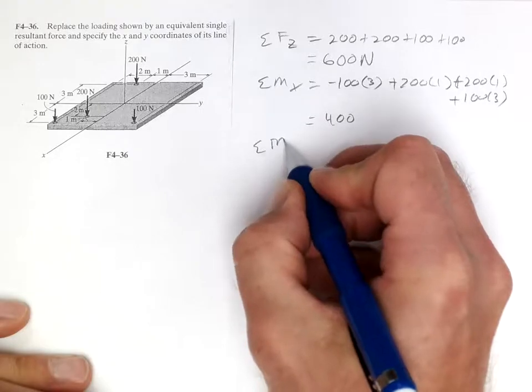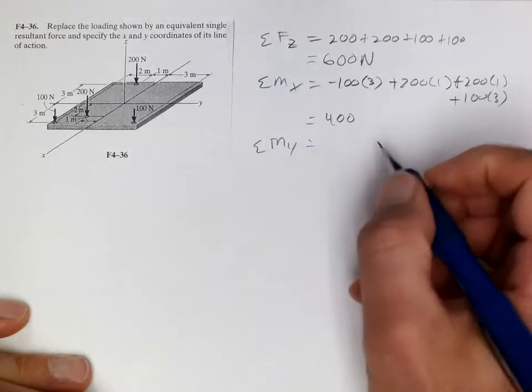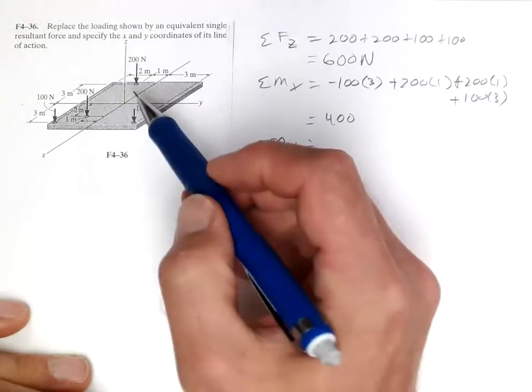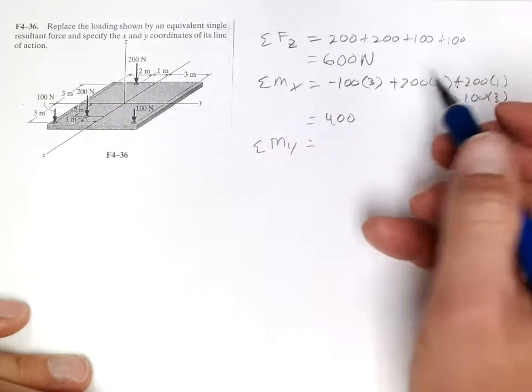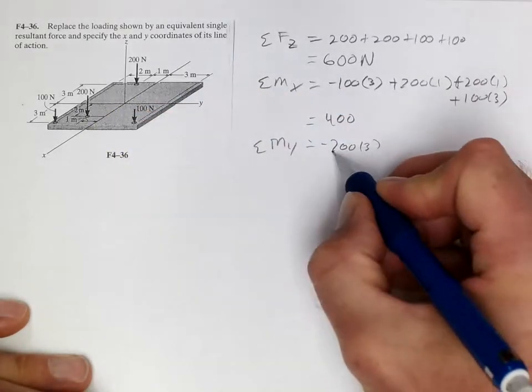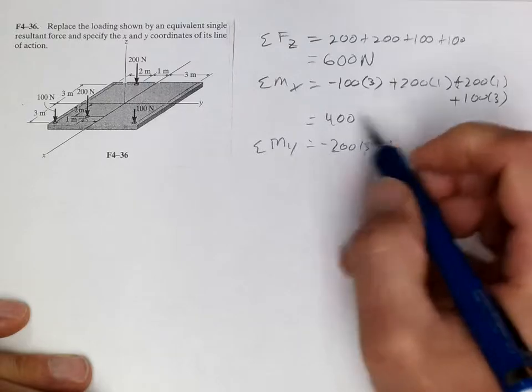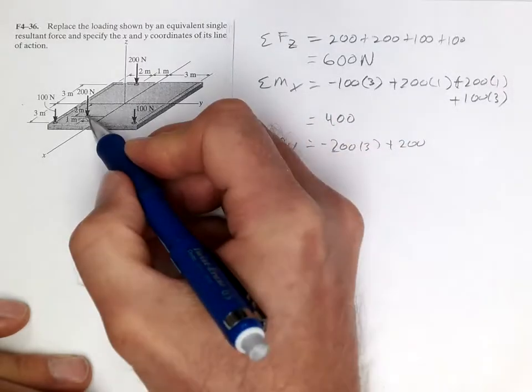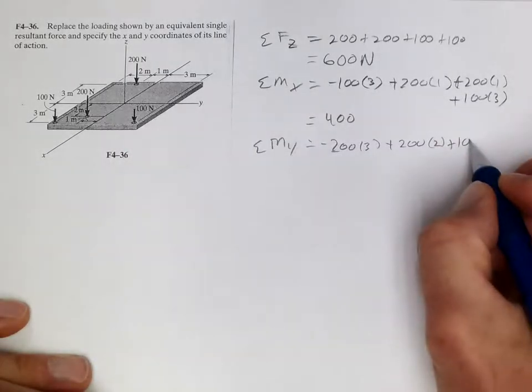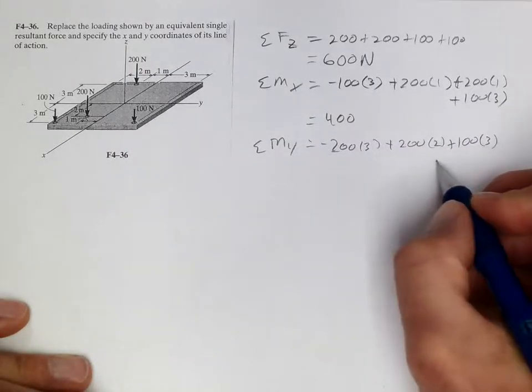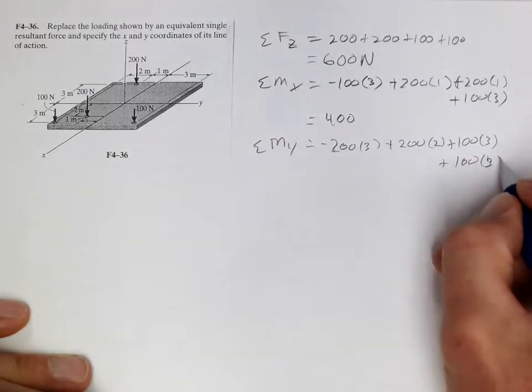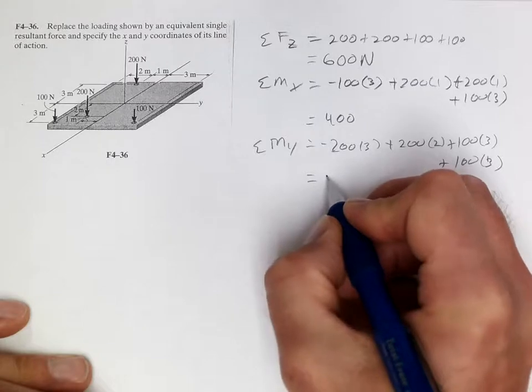Summing the moments in the y, so about the y-axis, we have these three will cause positive rotation, and that one will cause negative rotation. So negative 200 times 3, plus 200 times 2, plus 100 times 3, and plus 100 times 3 also. And that equals 400.